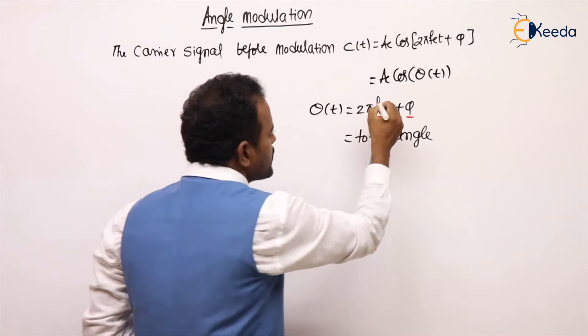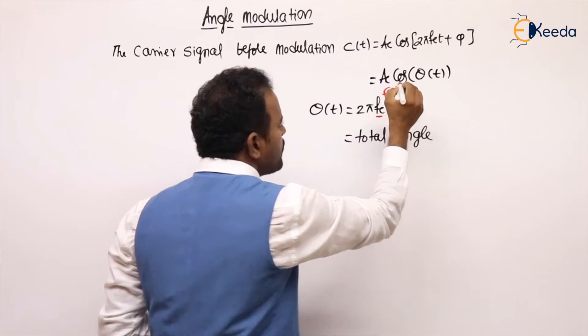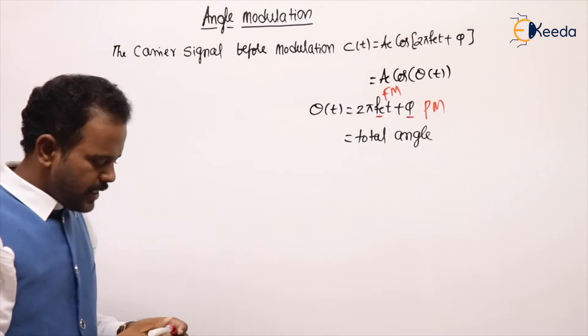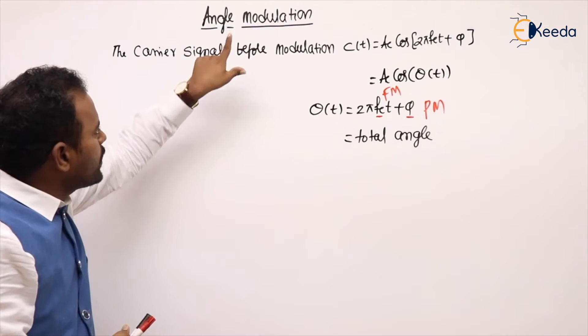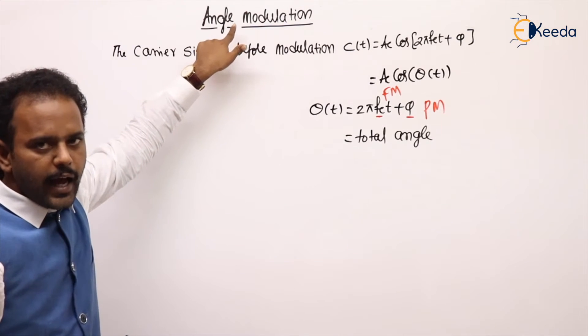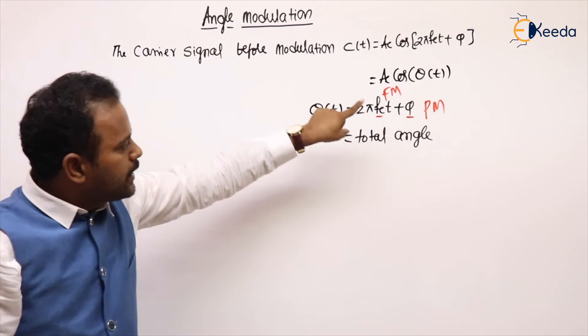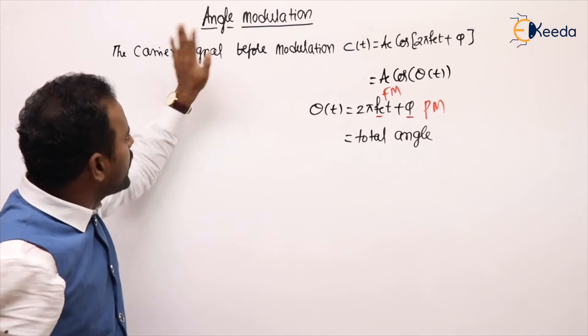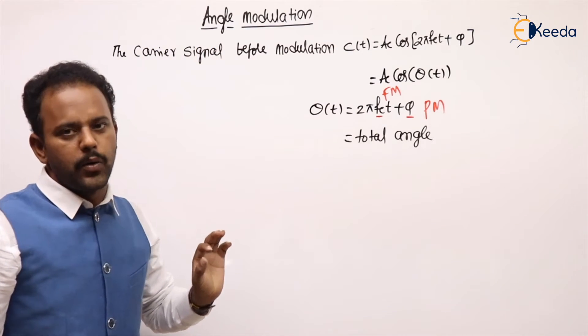Frequency is varying is called frequency modulation. Phase is varying is phase modulation. Angle modulation means we do not have any separate technique. Angle modulation means either frequency modulation happened or phase modulation happened.